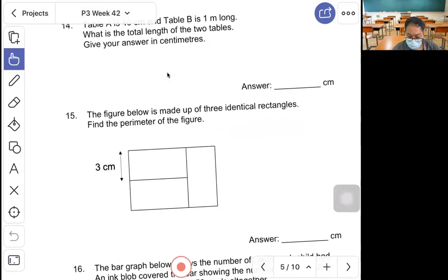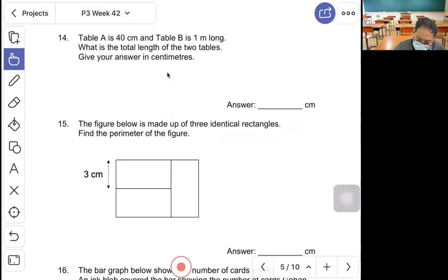Question 14, table A is 40 cm, table B is 1 meter long. What is the total length of the two tables? 40 cm plus 100 cm, because 1 meter is 100 cm. Answer is 140 cm.